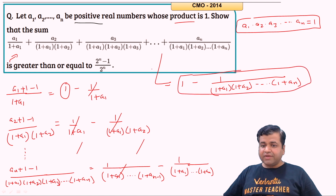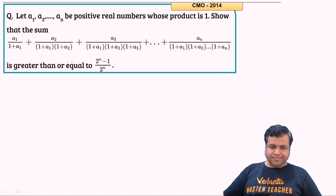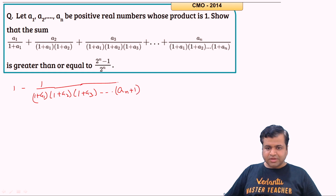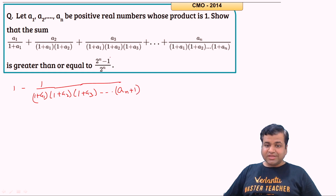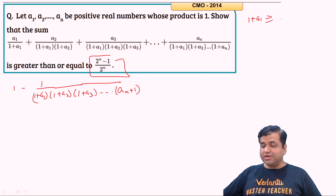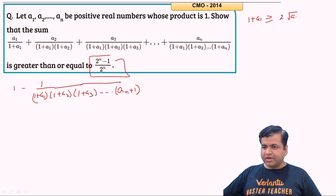We need to prove that 1 − 1/((1+A1)(1+A2)···(1+AN)) is greater than or equal to (2^n − 1)/2^n. By the AM-GM inequality, 1 + A1 ≥ 2√A1, so (1+A1) ≥ 2√A1. Similarly, (1+A2) ≥ 2√A2, (1+A3) ≥ 2√A3, and so on.